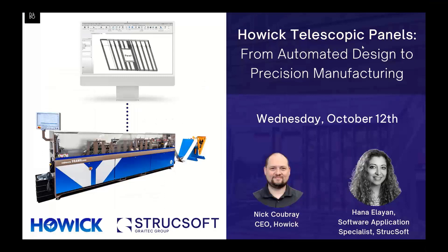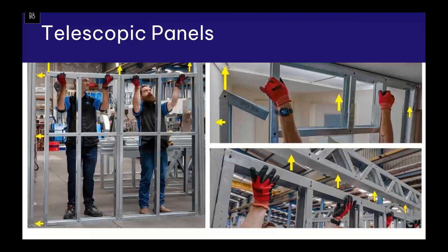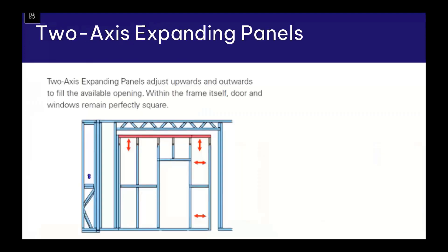So we developed this machine. The idea is that we can compress the panels and make them smaller, then extend them out to fit in the gaps. We can go straight from a Revit model and apply about a 10% tolerance — so we can be 10% bigger or 10% smaller and still fit in the building. We have a two-axis option, so we can go up and down or in and out to fit in the gap.